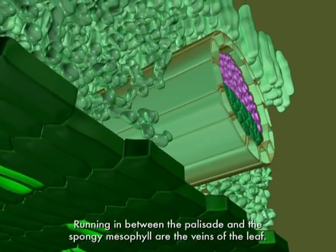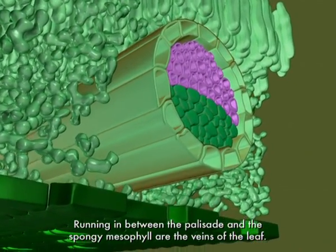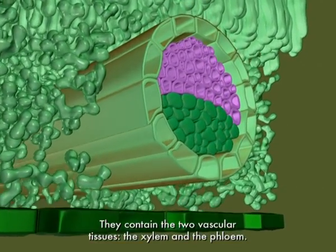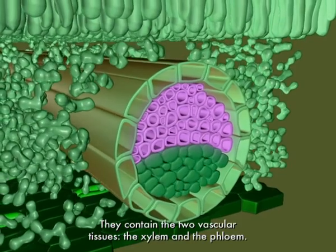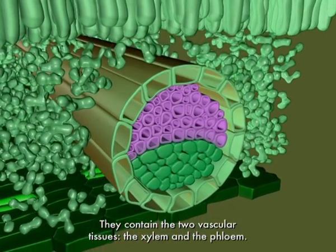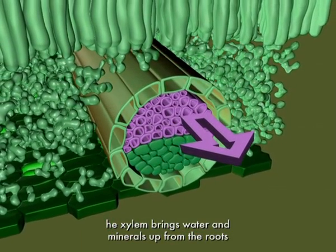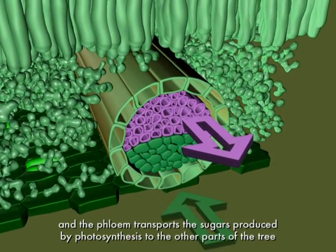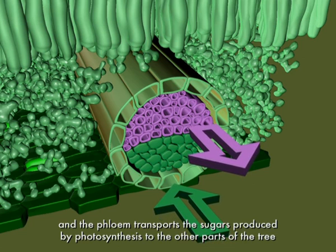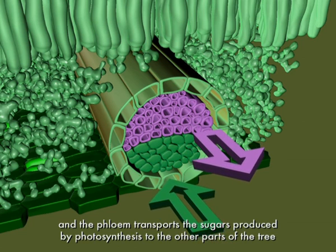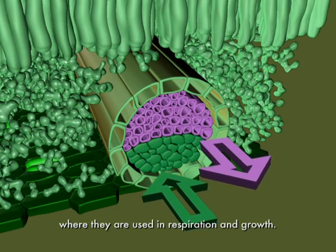Running in between the palisade and the spongy mesophyll are the veins of the leaf. They contain the two vascular tissues, the xylem and the phloem. The xylem brings water and minerals up from the roots, and the phloem transports the sugars produced by photosynthesis to the other parts of the tree, where they are used in respiration and growth.